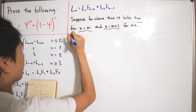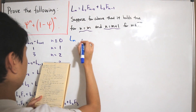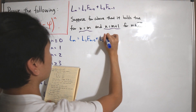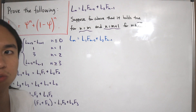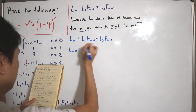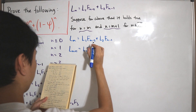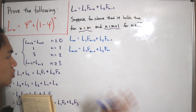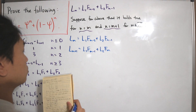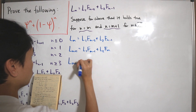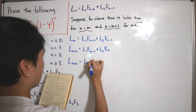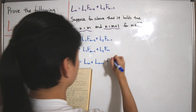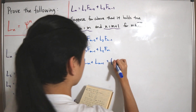So we have: L_m = L_1 · F_{m-2} + L_2 · F_{m-1}, and L_{m+1} = L_1 · F_{m-1} + L_2 · F_m. Now we show the m+2 term is true: L_{m+2} = L_m + L_{m+1} by definition. Substituting both expressions in gives us their sum.